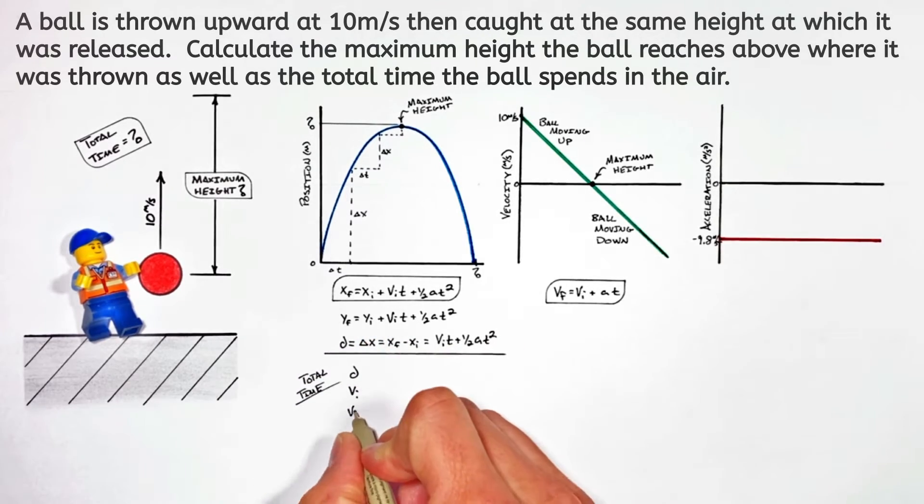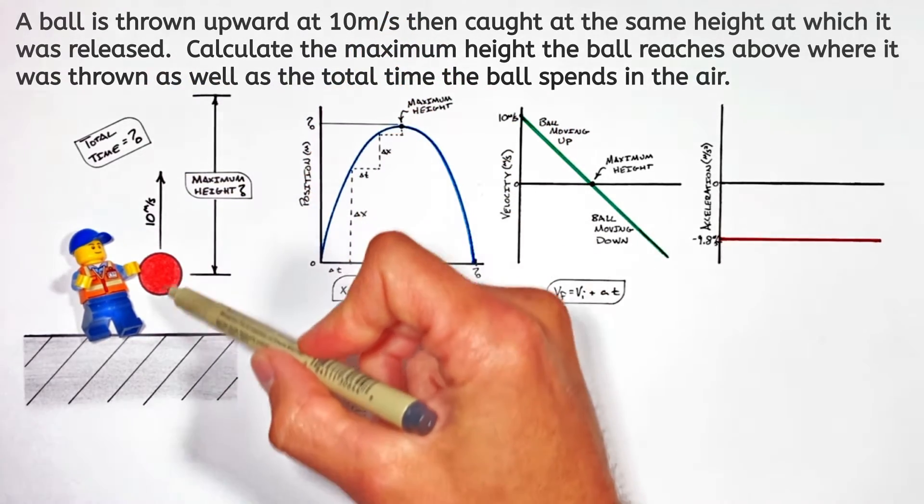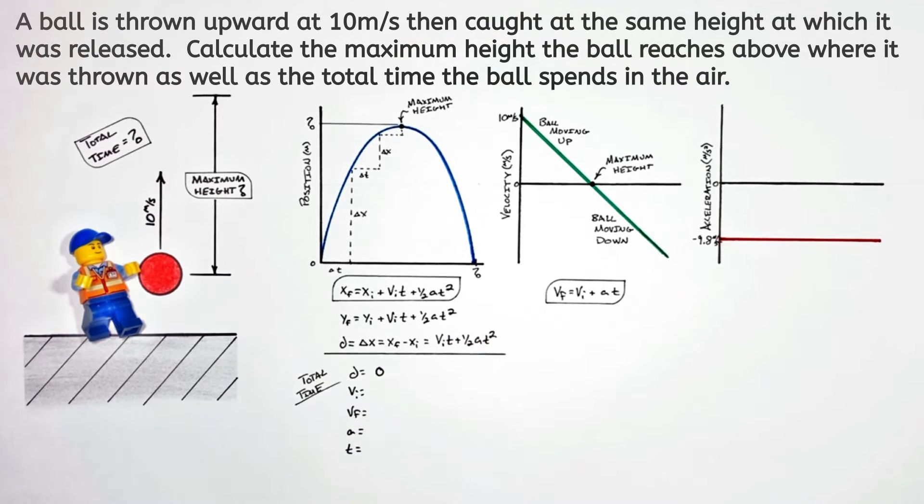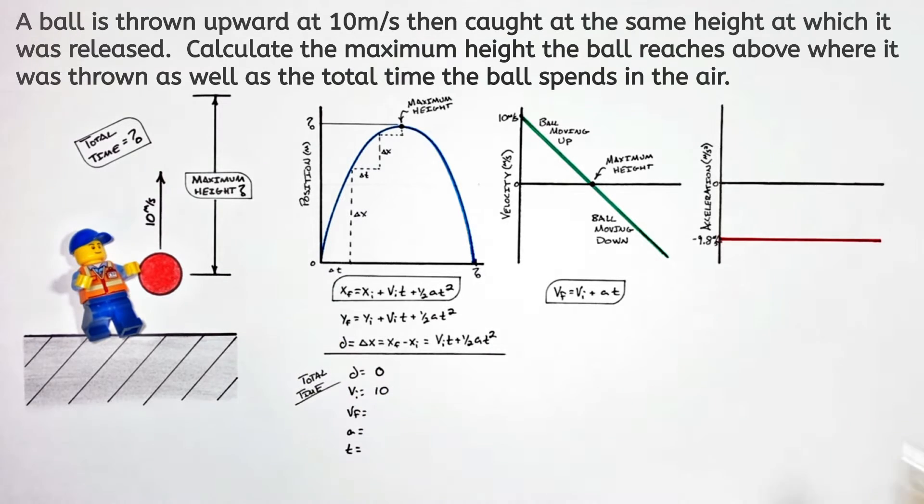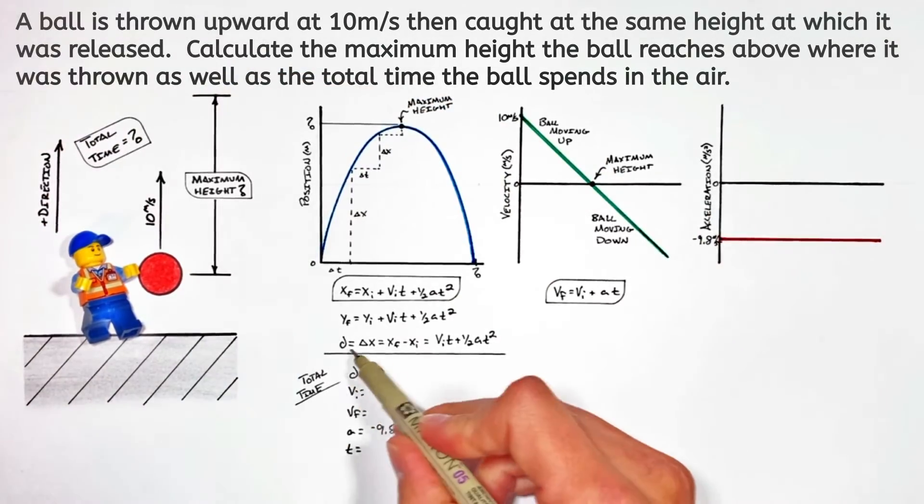To solve for the total time, we're going to lay out our five kinematic variables. Because the ball starts and finishes at the same height, the total displacement is going to be zero. That can be confusing—realize it doesn't mean the ball doesn't go anywhere, it just means the ball starts and finishes at the same spot. The initial velocity is 10, and because the ball is in free fall the entire time, even on its way up, the acceleration is going to be negative 9.8.